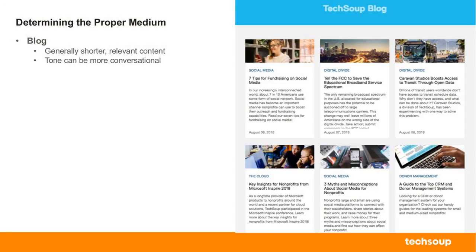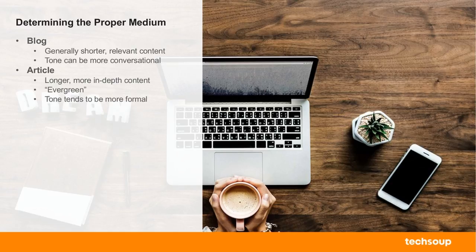Next up is an article. Articles are a little bit more serious and can be more in-depth. They last longer both to read, but also in terms of being something called evergreen — named for the evergreen trees, meaning you can post something and there's a good chance it's going to be just as relevant a year from now. The tone here tends to be more formal.